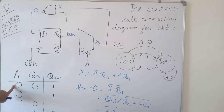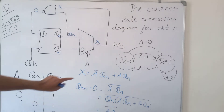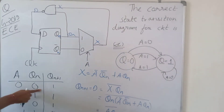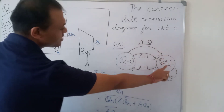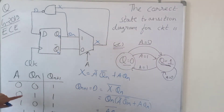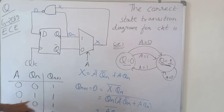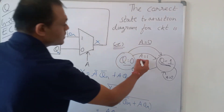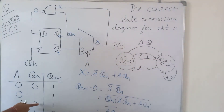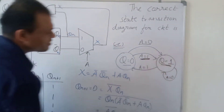From the table: when a = 0 and present state Qn = 0, next state Qn+1 = 1. When a = 1 and Qn = 0, next state is also 1. So from state Q = 0, regardless of whether a is 0 or 1, the next state is Q = 1.